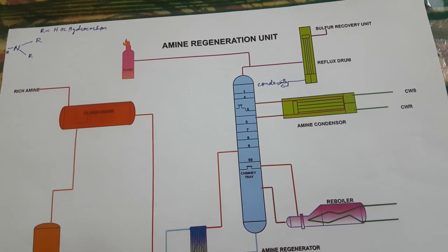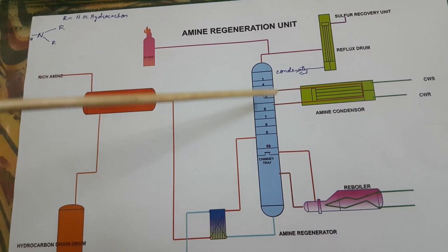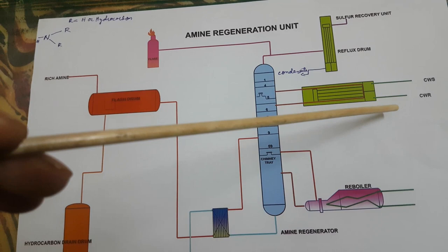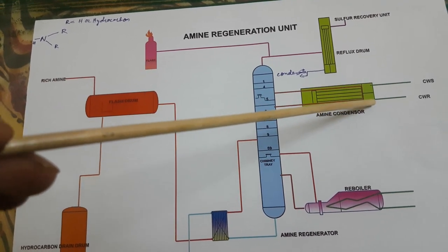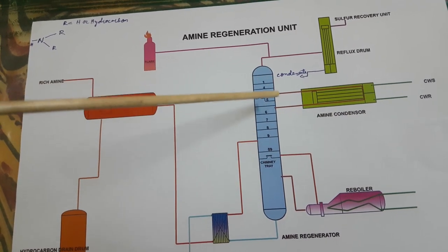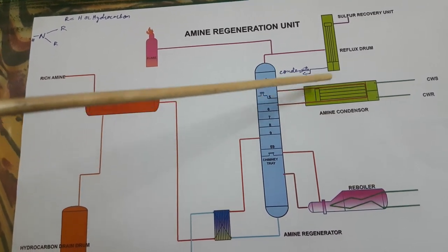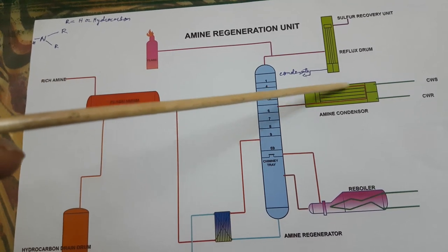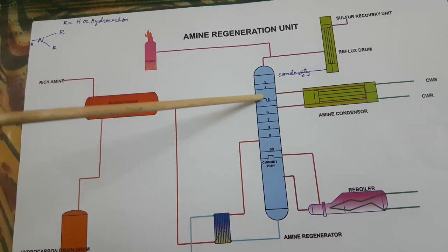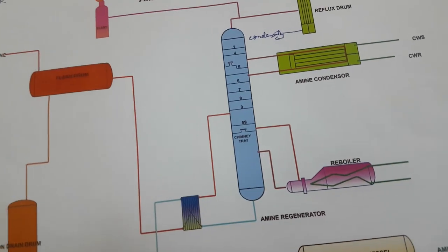This is the amine condenser. The condenser condenses the amine. From the chimney tray, amine goes to the condenser and gets cooled using cooling water supply. These are all based on control loops: if temperature is high or pressure is high, a high amount of cold water is sent, the amine gets cooled, and temperature and pressure get restored. That is the function of the amine condenser.